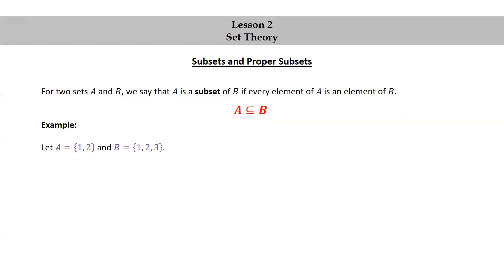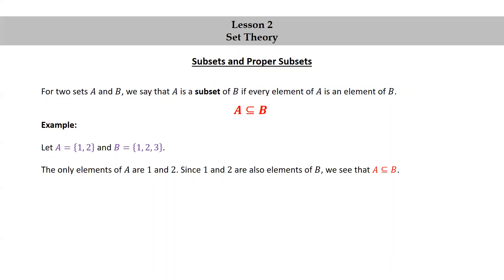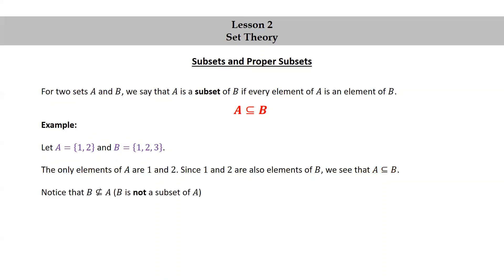Let's look at an example. Let A be the set consisting of 1 and 2, and B the set consisting of 1, 2, and 3. The only elements of A are 1 and 2. Since 1 and 2 are also elements of B, we see that A is a subset of B. Notice that B is not a subset of A, because 3 is in B but 3 is not in A.